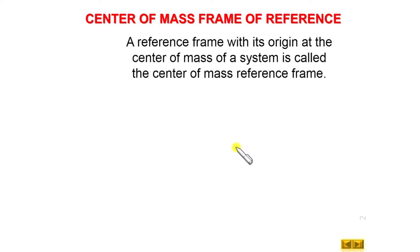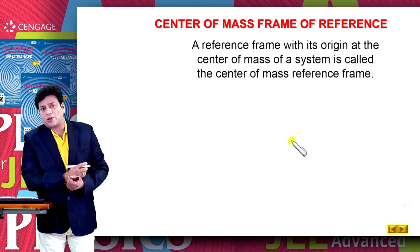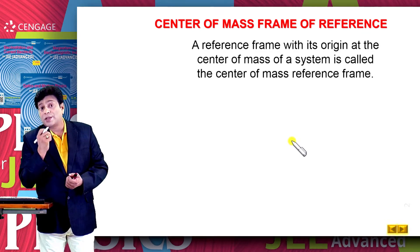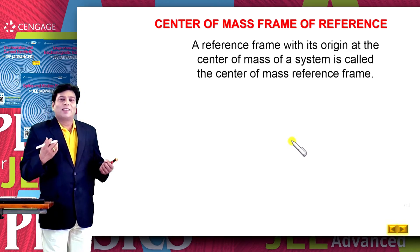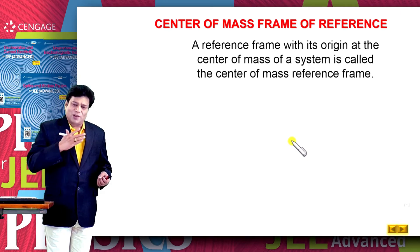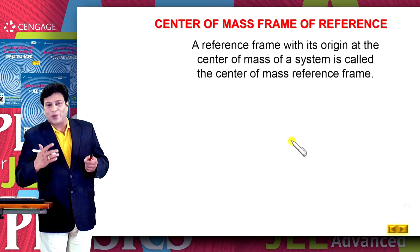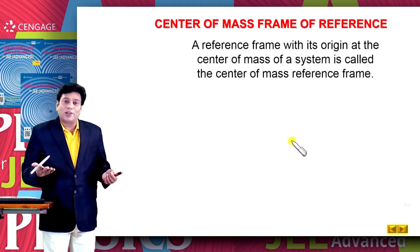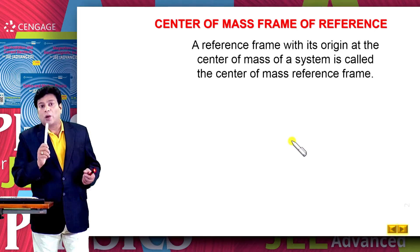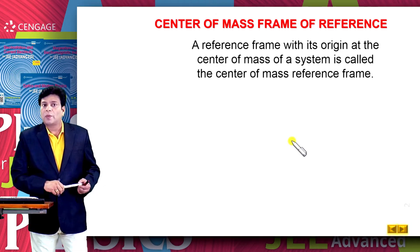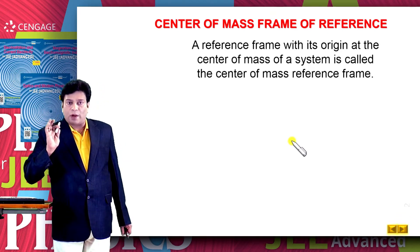Now let us ask a very simple question: what is the velocity of the center of mass in the center of mass frame of reference? It is zero, of course — just as if you are driving in a car and I ask you what is your velocity with respect to the car, that is also zero. So in the center of mass frame, the velocity of the center of mass is zero.